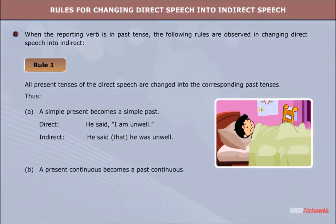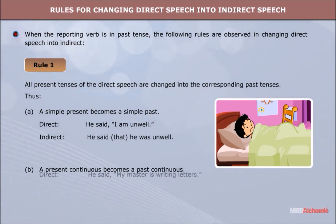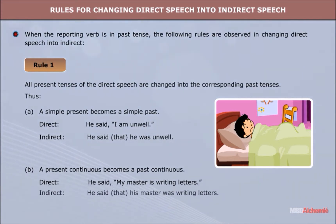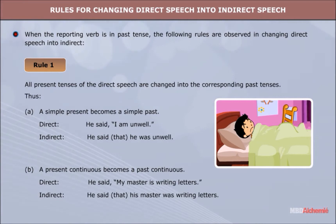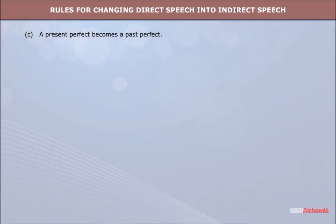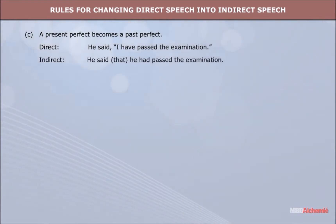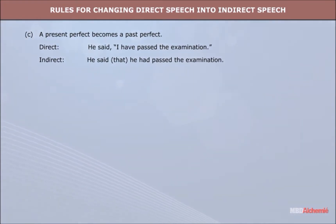B. A present continuous becomes a past continuous. Direct: He said, 'My master is writing letters.' C. A present perfect becomes a past perfect. Direct: He said, 'I have passed the examination.' Indirect: He said that he had passed the examination.